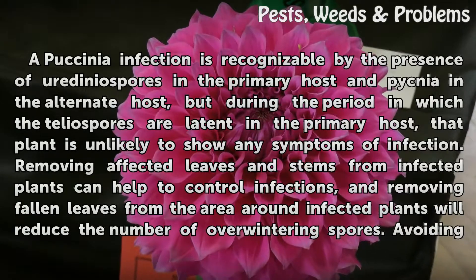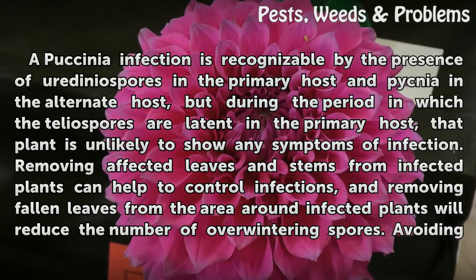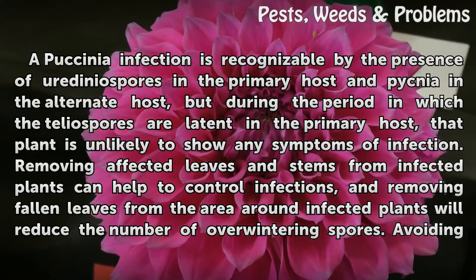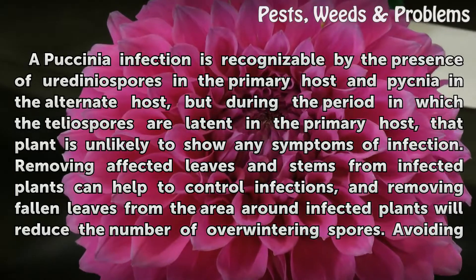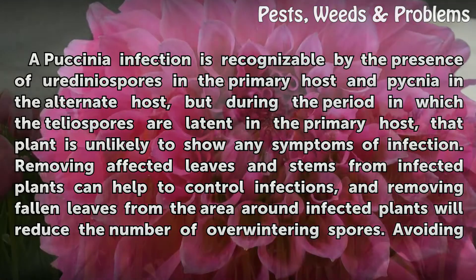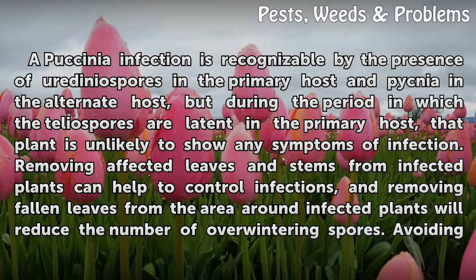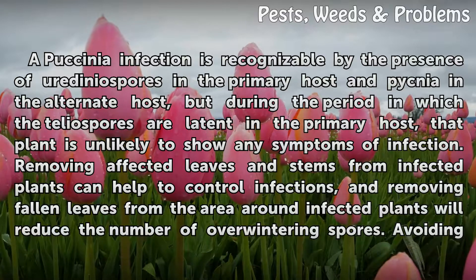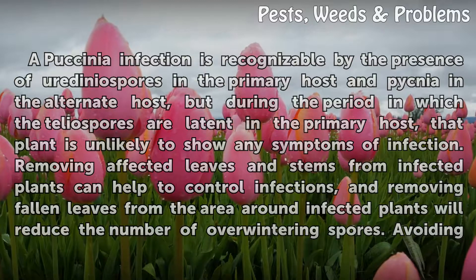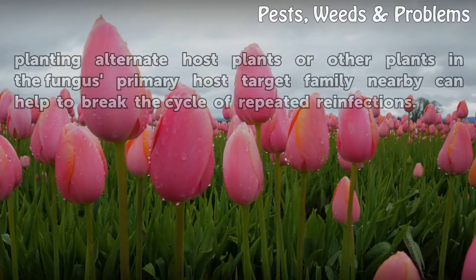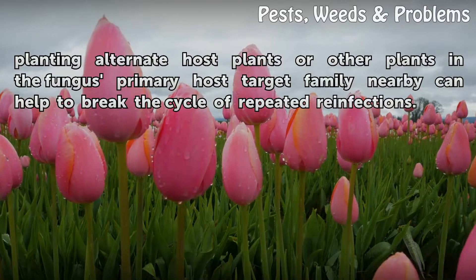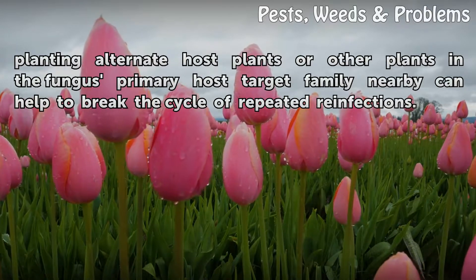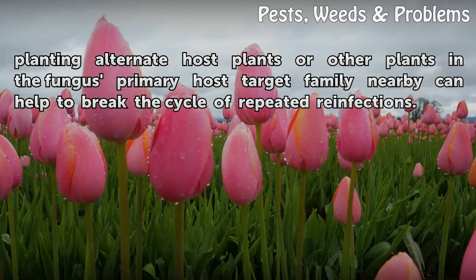Vaxenia infection is recognizable by the presence of uridinium spores in the primary host and pycnia in the alternate host, but during the period in which the teleospores are latent in the primary host, that plant is unlikely to show any symptoms of infection. Removing affected leaves and stems from infected plants can help to control infections, and removing fallen leaves from the area around infected plants will reduce the number of overwintering spores. Avoiding planting alternate host plants or other plants in the fungus primary host target family nearby can help to break the cycle of repeated re-infections.